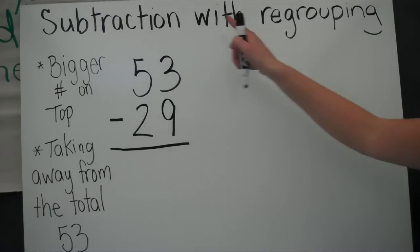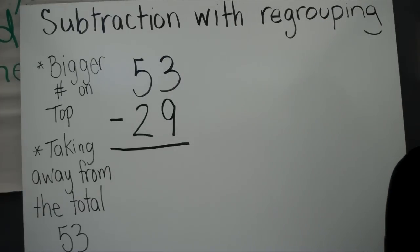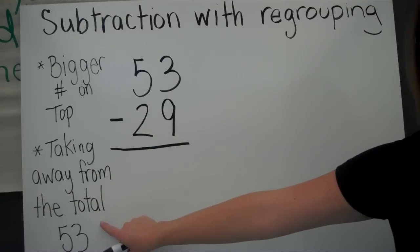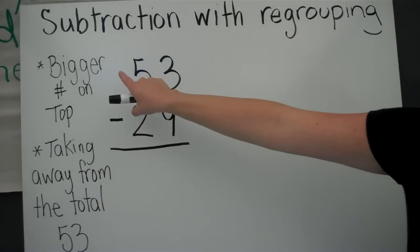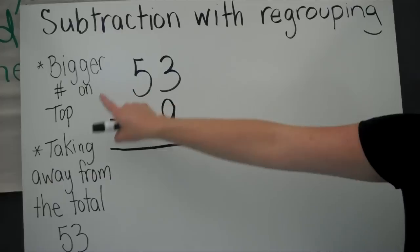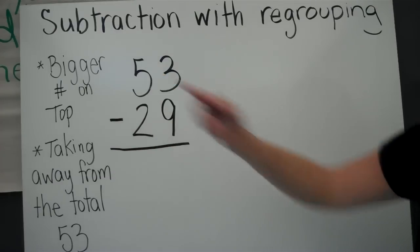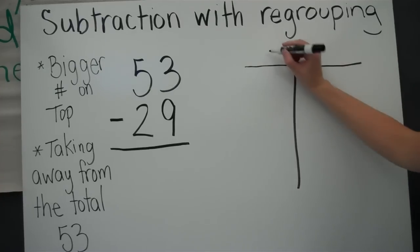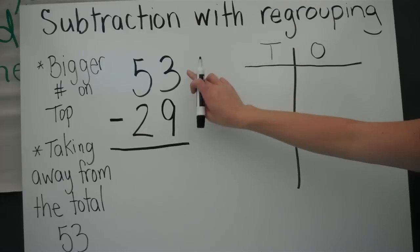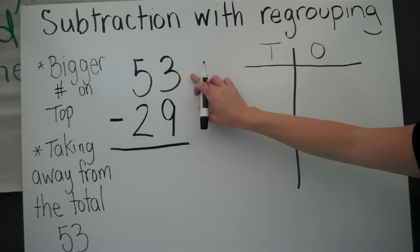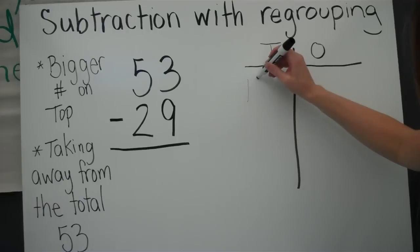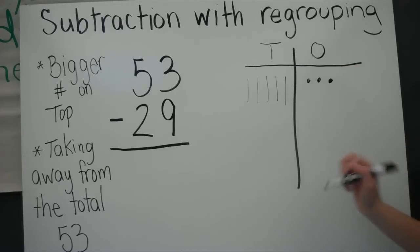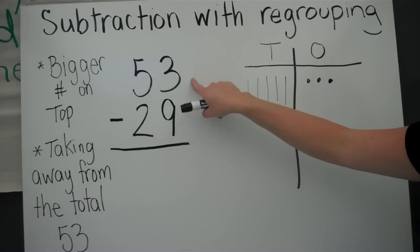Today we're going to learn subtraction with regrouping. Remember, we talked about yesterday that we are taking away from the total, and we always want to make sure that our bigger number is on top. 53 is a larger value than 29, so 53 goes on top. We're going to start by drawing out our place value blocks — we only draw 53 because that's the total, then we'll take 29 away from 53.